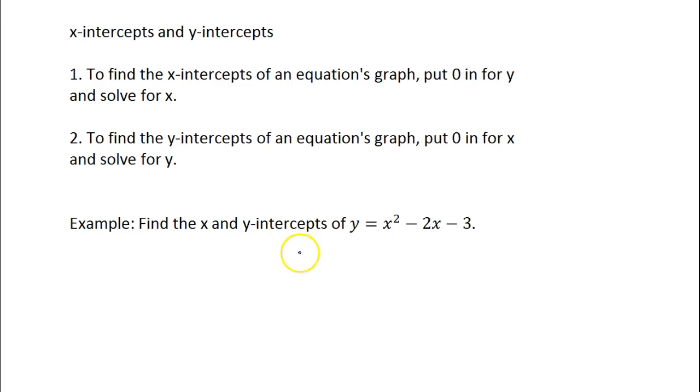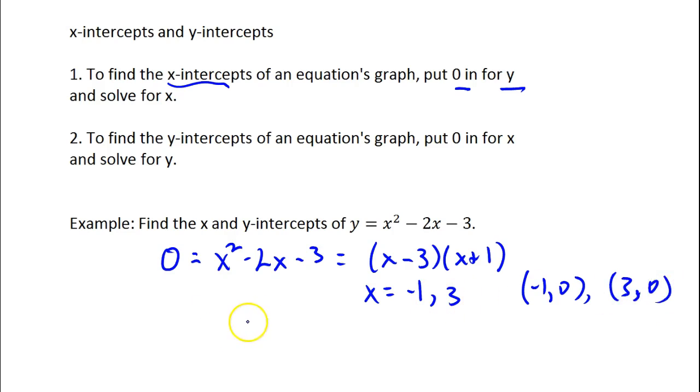So let's do this example. Find the x-intercepts of this quadratic right here. Well, to find the x-intercepts, I'm going to put in 0 for y. So 0 will equal x squared minus 2x minus 3. That will factor x minus 3, x plus 1. So x equals negative 1 and 3. We have two x-intercepts. One of them is at negative 1, 0. And the other one is at 3, 0. To find the y-intercept, I put in 0 for x. So y will equal 0 squared minus 2 times 0 minus 3. And we get negative 3. So my y-intercept is 0, negative 3.